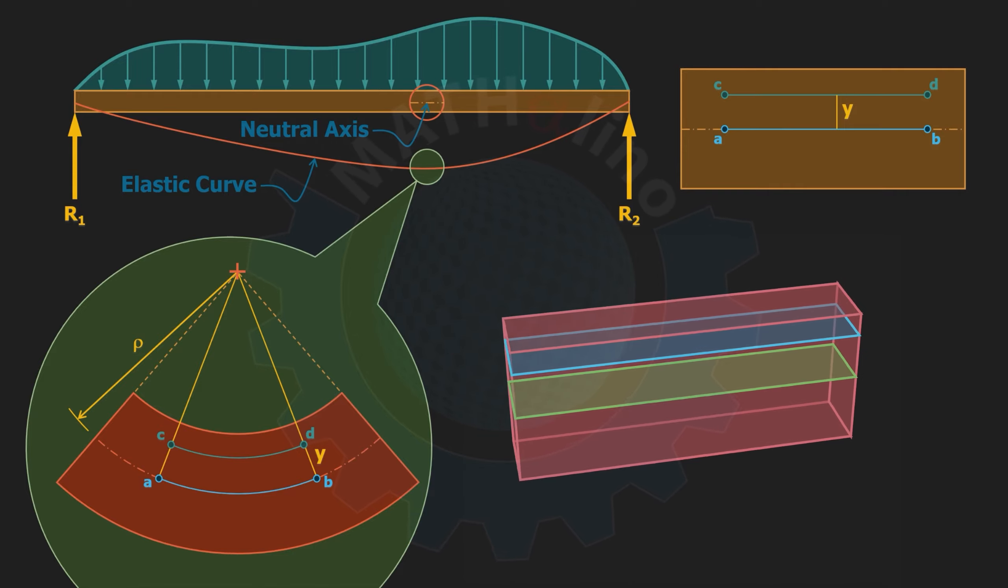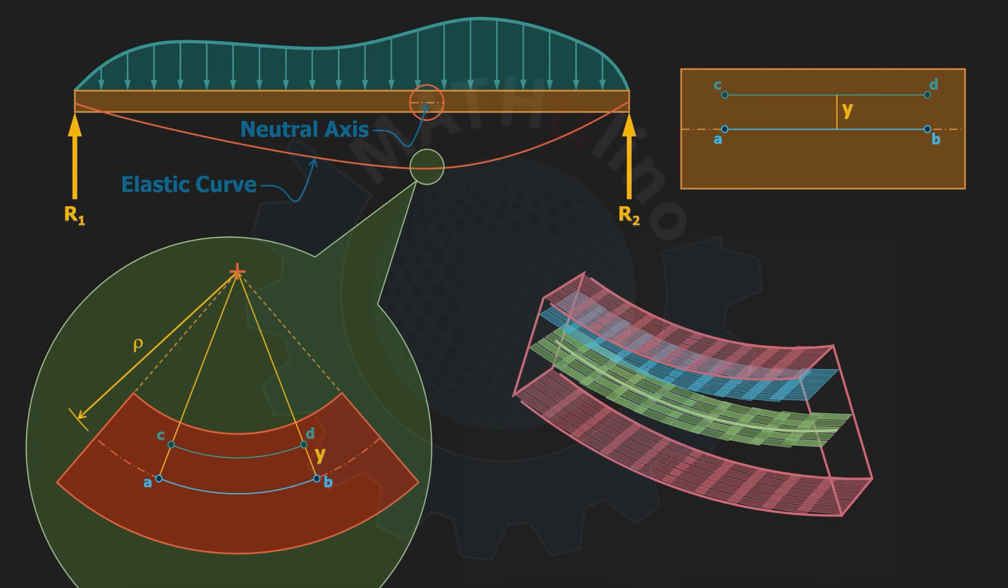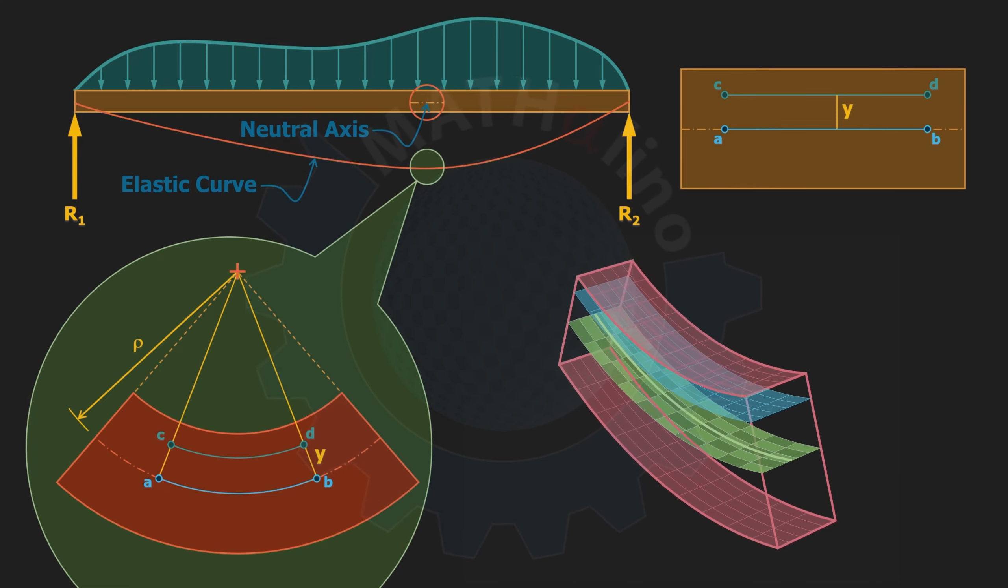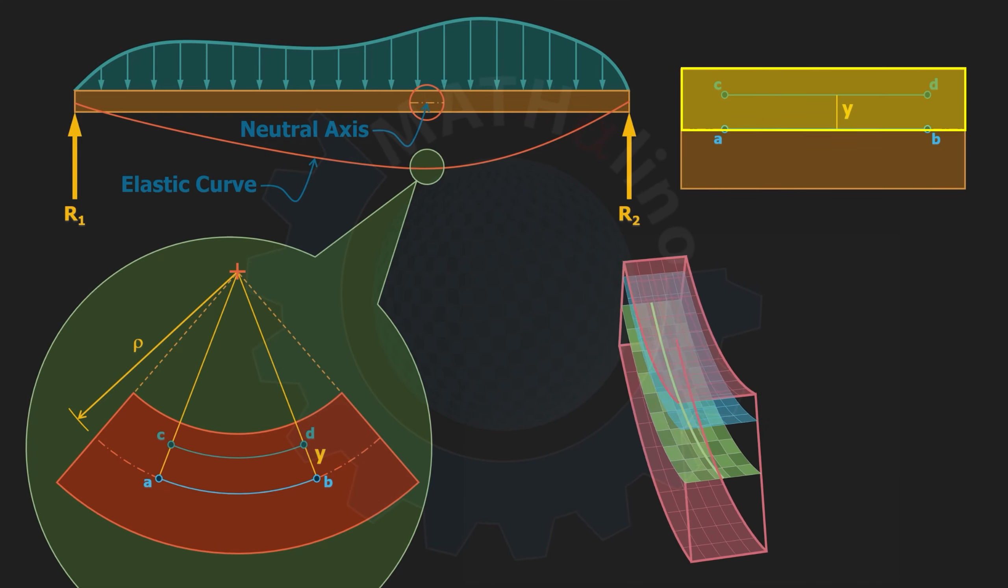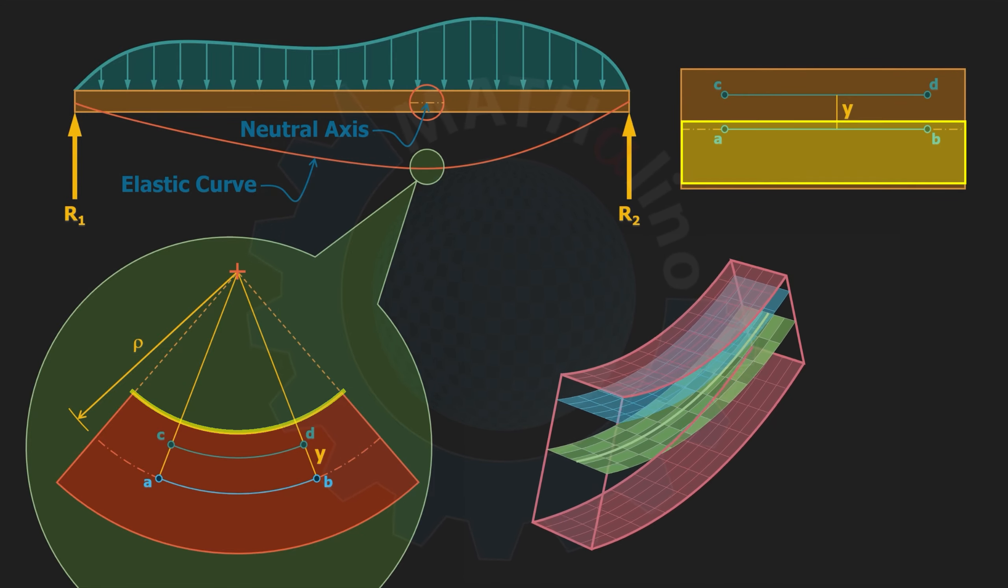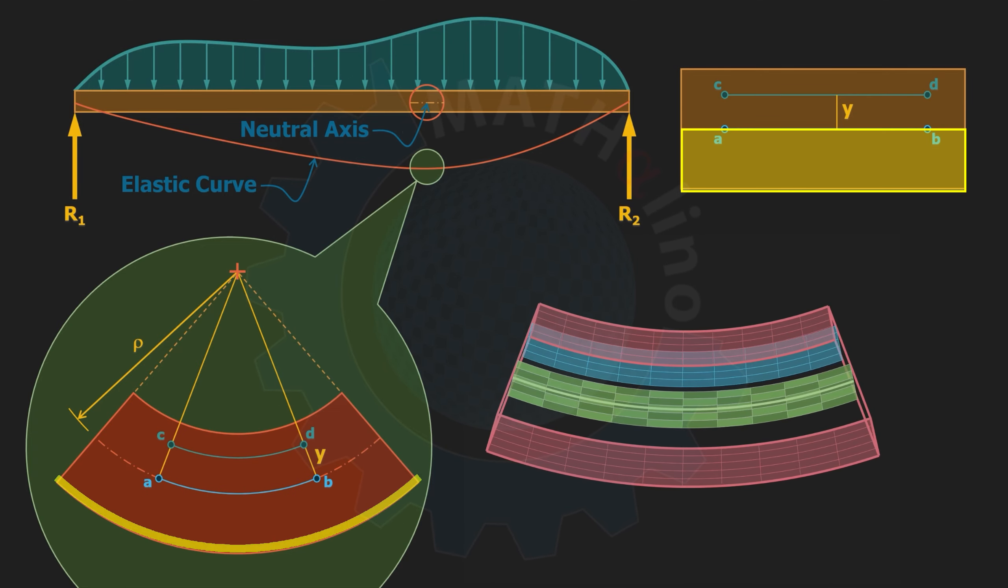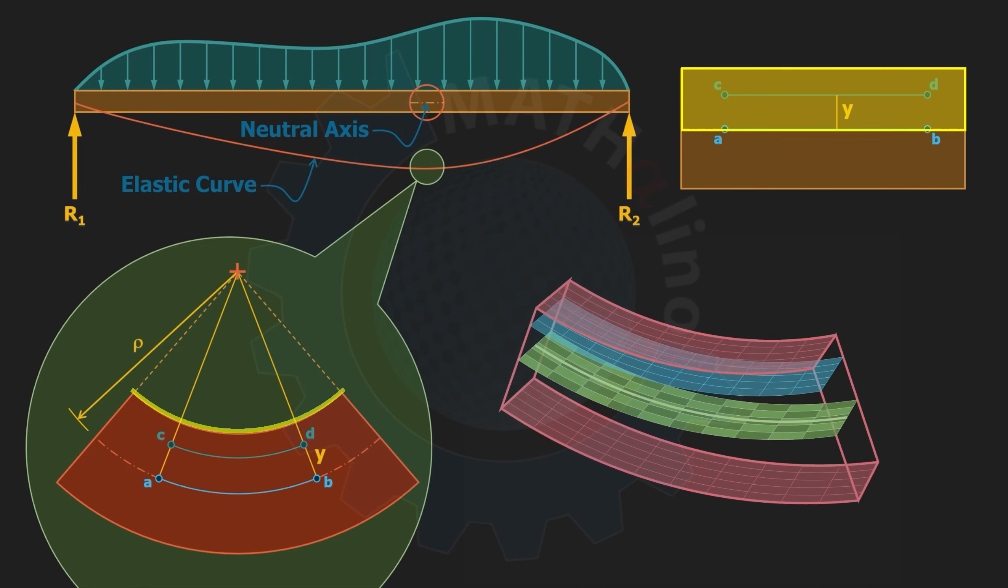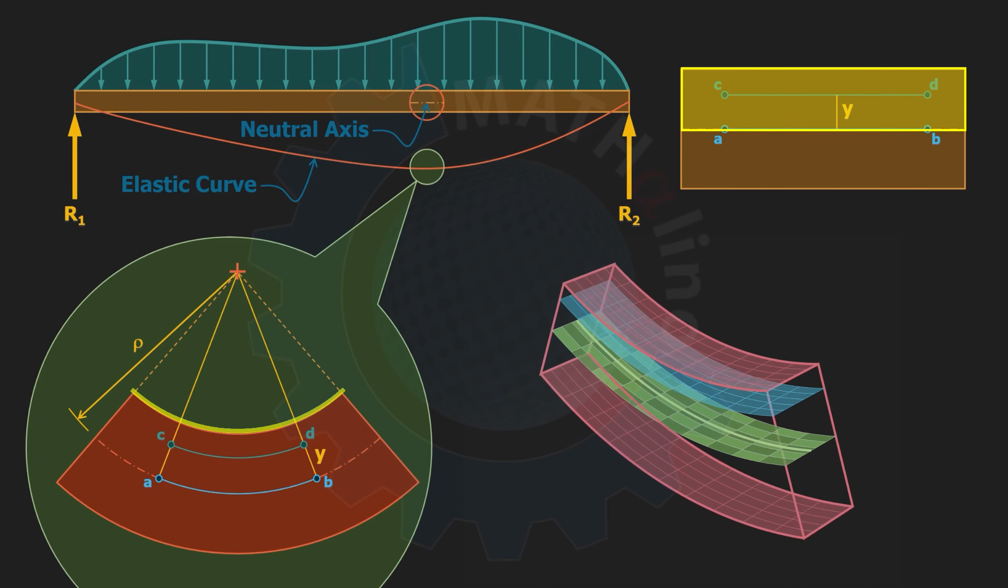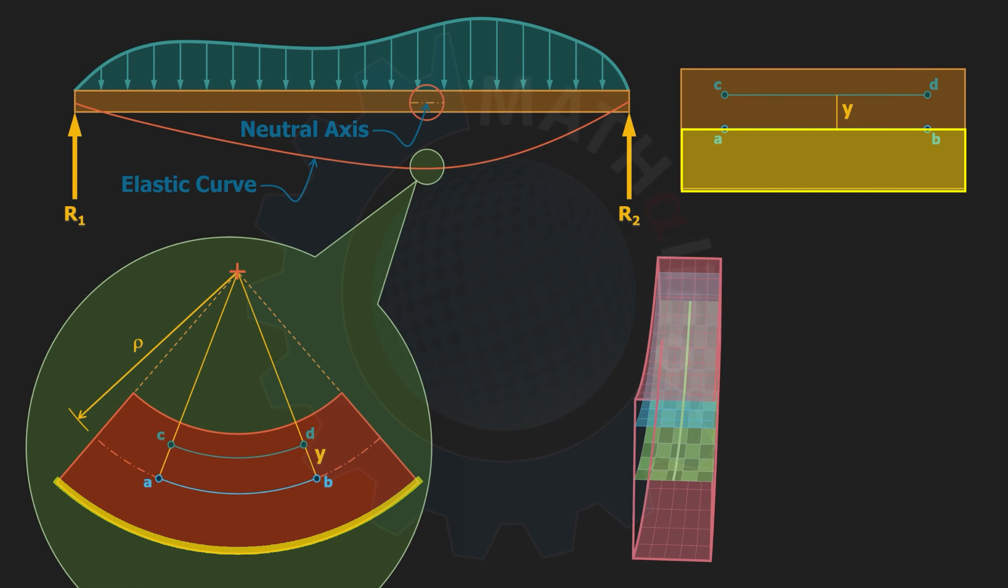Observe that our surfaces are flat before the deformation. After the loads are applied, the beam will curve upward. Because of the upward curvature, all fibers above the neutral plane are compressed, hence shortened, while fibers below the neutral plane are stretched, hence lengthened. Fibers that shortened were subjected to compressive stress and fibers that lengthened were under tensile stress.